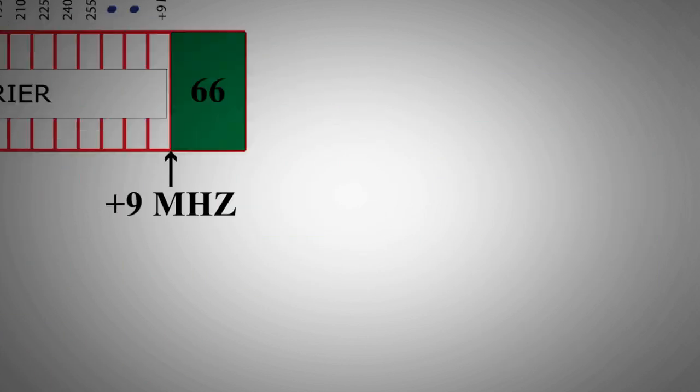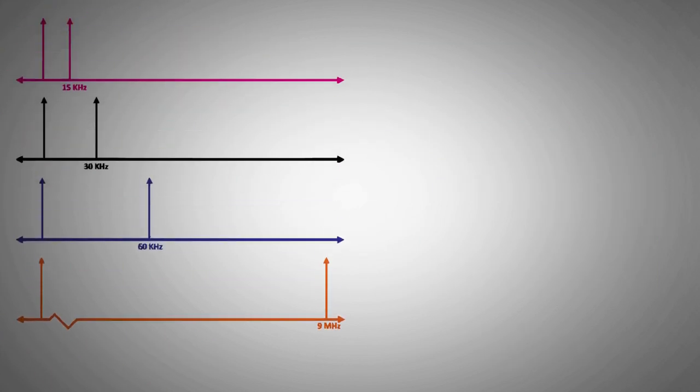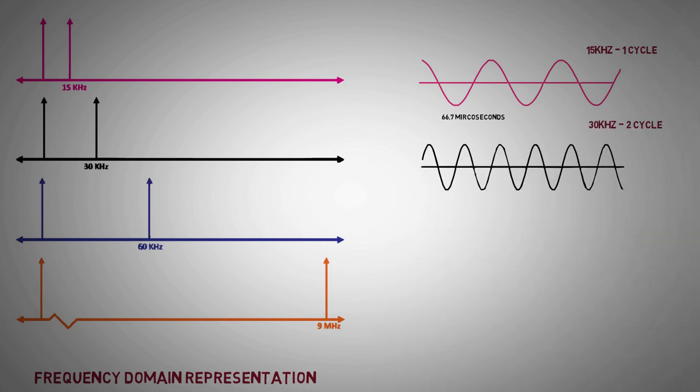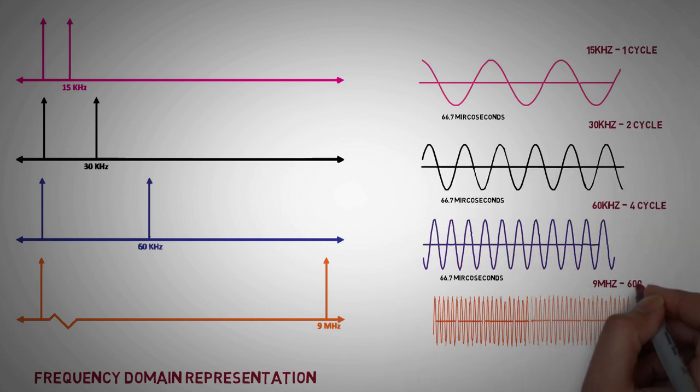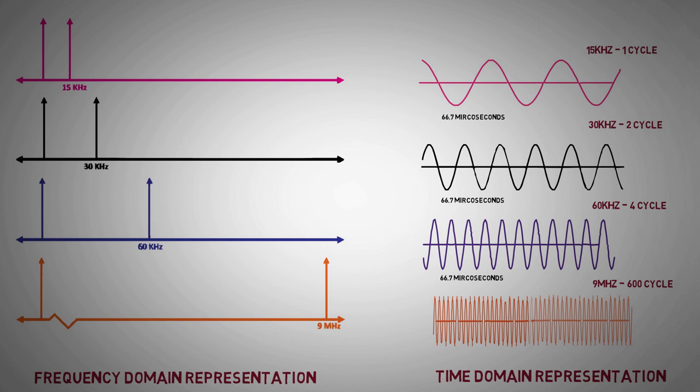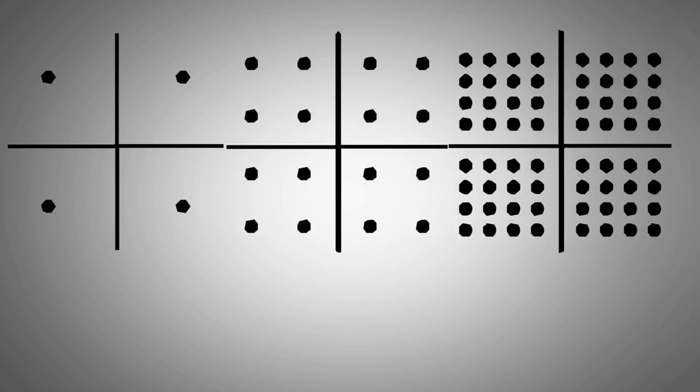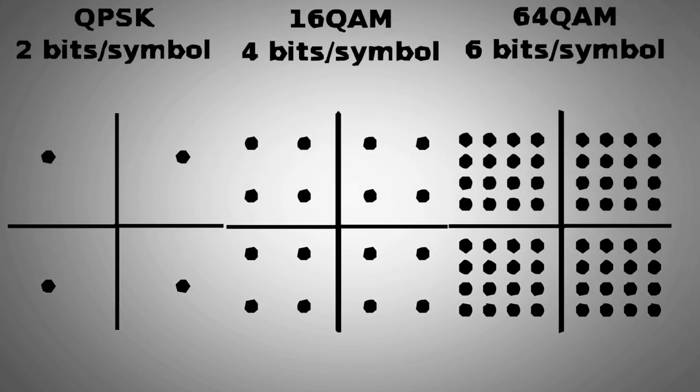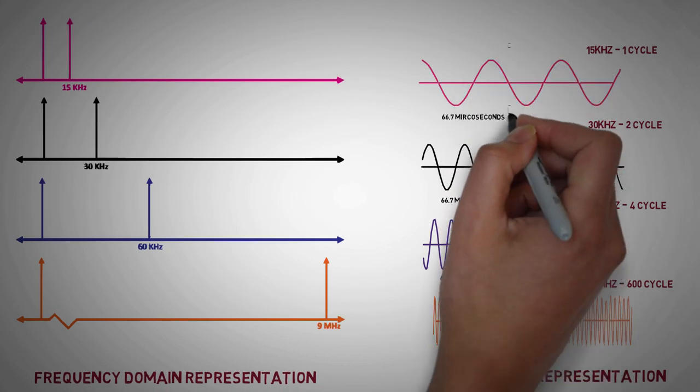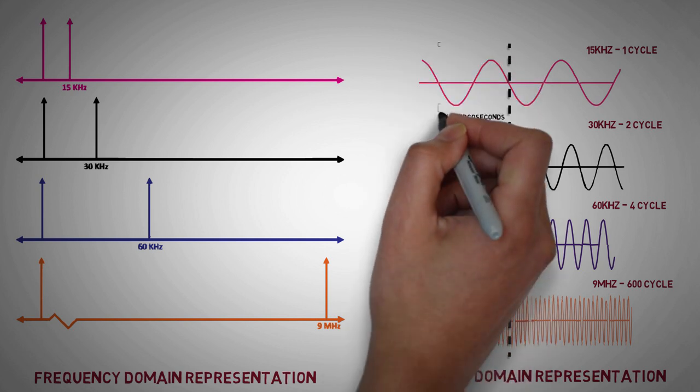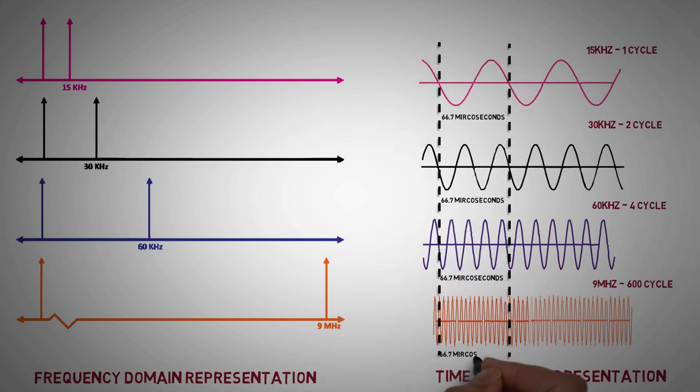In time domain, these sub-carriers will be represented as everlasting sinusoids at these carrier frequencies as shown. However in order to transmit data over these sub-carriers, they are loaded with modulation symbols that represent the constellation points of digital modulation schemes like QPSK and nth order QAM. Also the symbol duration for each of these sub-carriers is always equal to 66.7 microseconds, which means that all these sub-carriers have a whole number of cycles in one symbol duration.